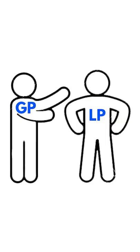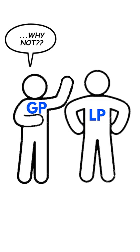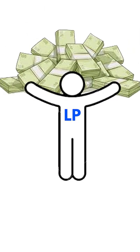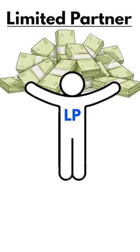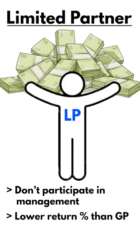When the GP goes around raising money, the people who invest are LPs, or limited partners. They make up the bulk of the equity investment, but are silent because they're limited. They don't take part in management and only get involved in decisions in extreme scenarios. They get lower percentage returns but are exposed to less risk because they're usually paid before the GP.